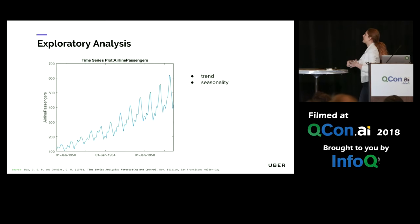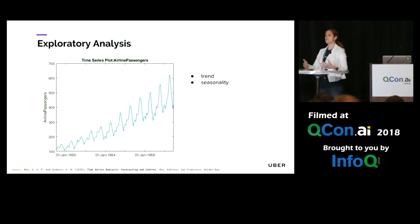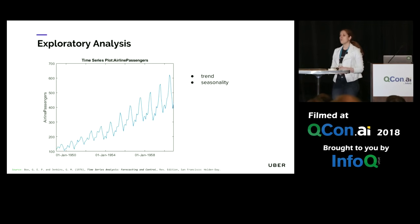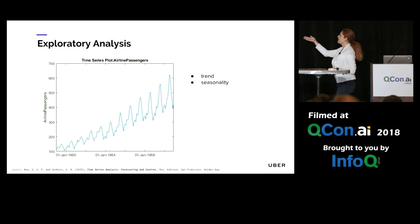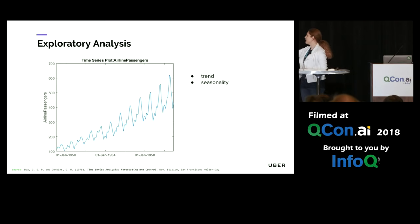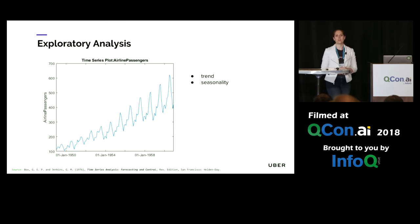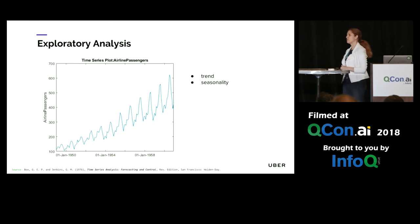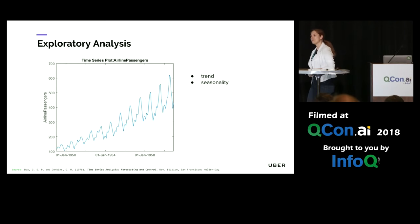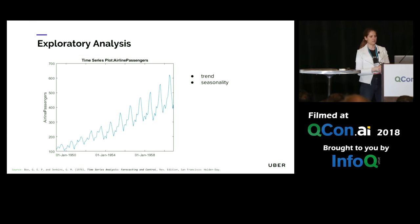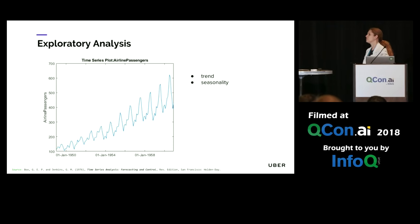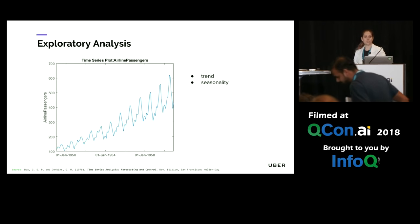So how do we tackle forecasting problems? The first thing I typically do is some exploratory analysis — whenever I can, I visualize the data. One of the things about time series is they typically have some underlying patterns. Here's some airline passenger data from the 1950s over a couple of years. As you can see, there is an underlying trend going up and to the right — my favorite kind of graph — and then there is some seasonality overlying that, in this case an annual seasonality. Forecasting methods need to be able to capture and model such underlying patterns.